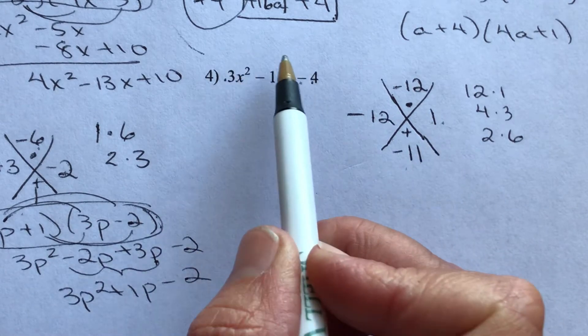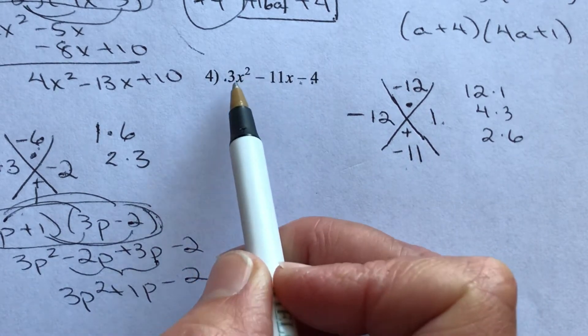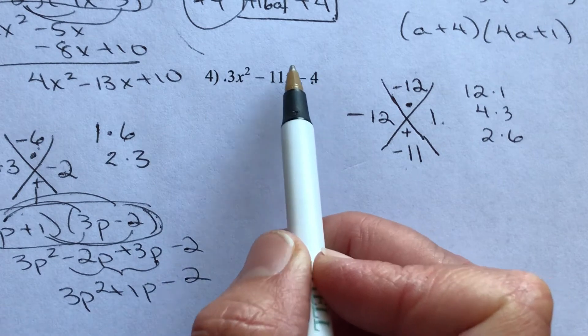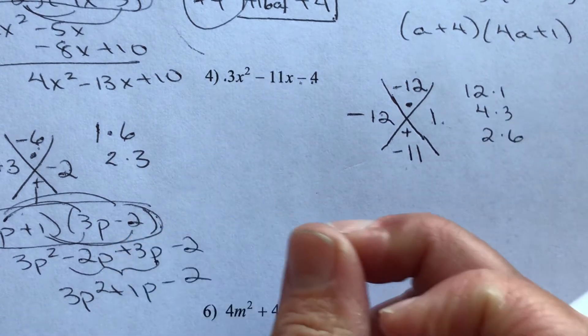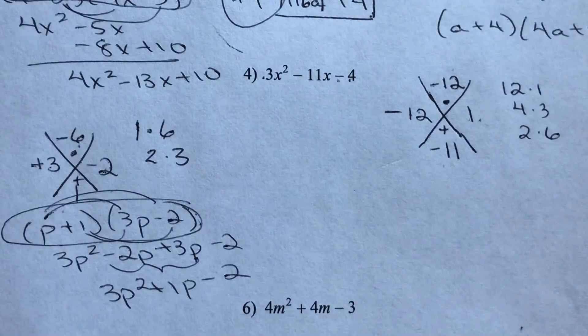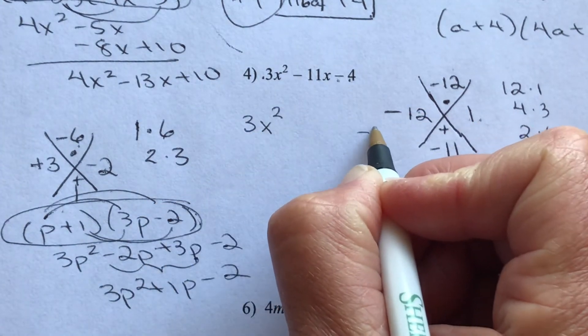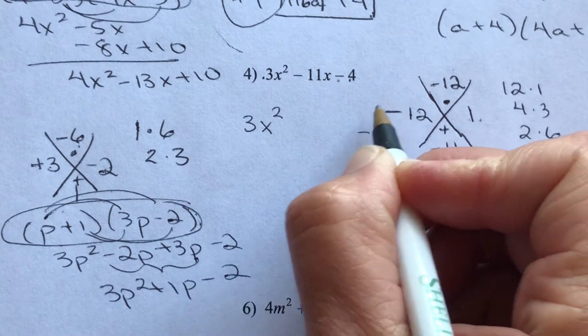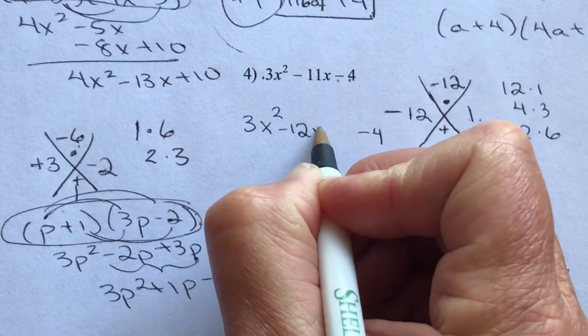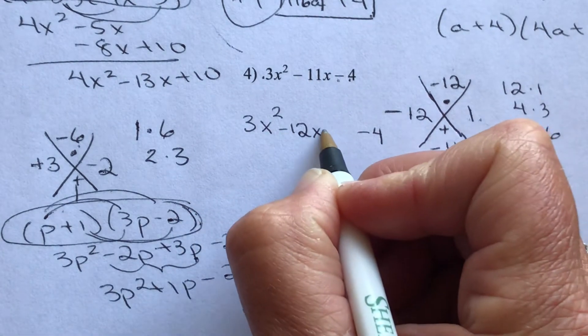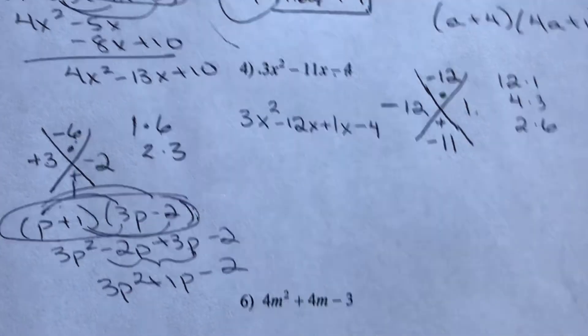And remember, we're splitting this middle term. The first term stays the same. The second term stays the same. And we're grabbing this middle guy and splitting it. So here we go. So we have 3x squared, negative 4 at the end. We have negative 12x and positive 1x. Beautiful.